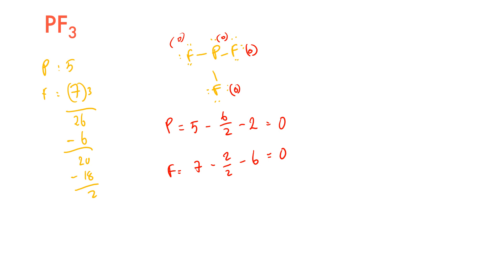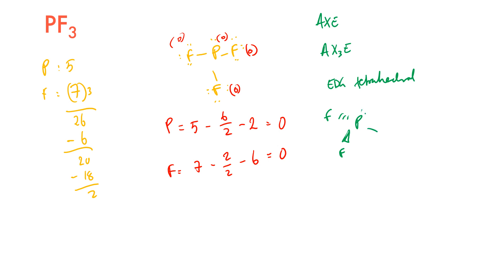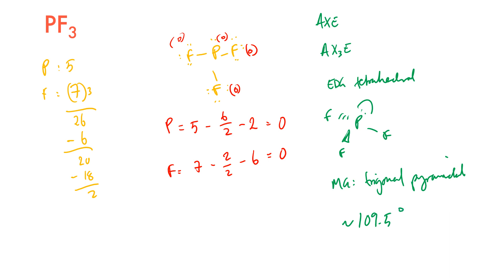Using AXE notation for PF₃: A is the phosphorus, X₃ are the 3 fluorines, and E₁ is the 1 lone pair. This gives an electron domain geometry of tetrahedral and a molecular geometry of trigonal pyramidal, with bond angles of approximately 109.5 degrees.